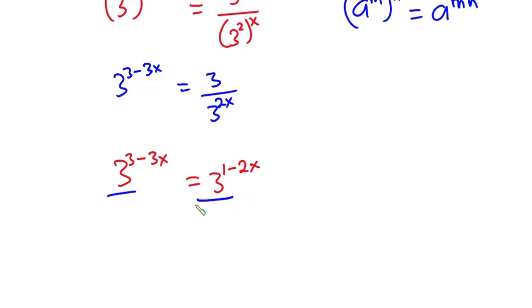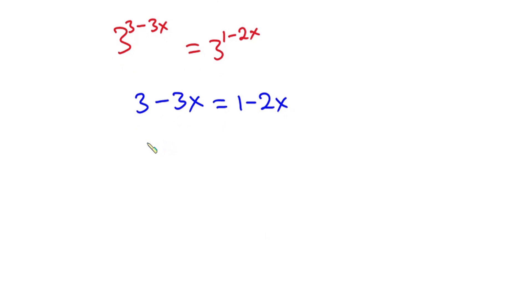Now the bases are the same so I can equate the exponents. So we have 3 minus 3x equals 1 minus 2x. Simplifying this we have 3 minus 1 equals negative 2x plus 3x. 3 minus 1 is 2 and this equals x, so x equals 2.